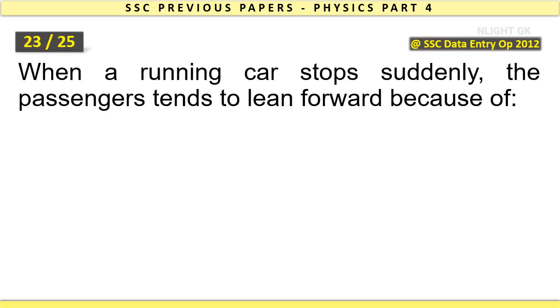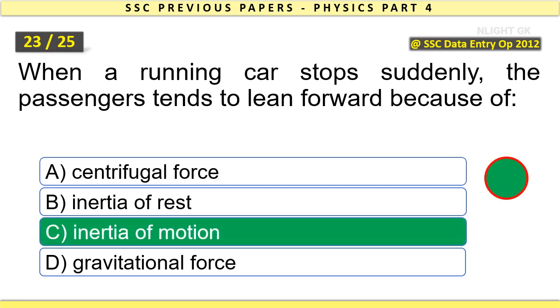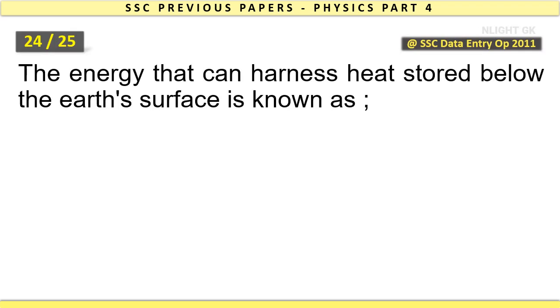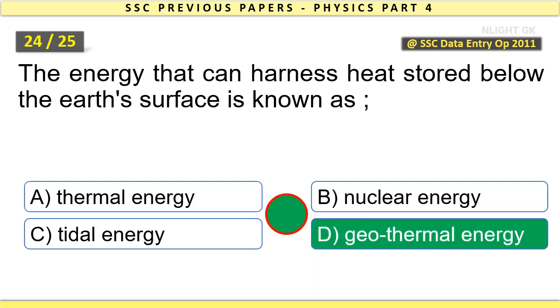When a running car stops suddenly, the passengers tend to lean forward because of inertia of motion. The energy that can harness heat stored below the earth's surface is known as geothermal energy.